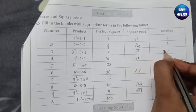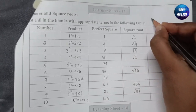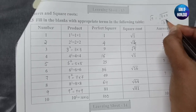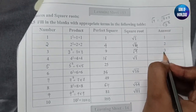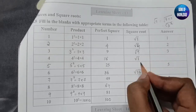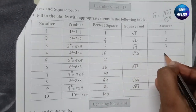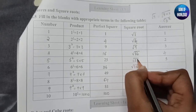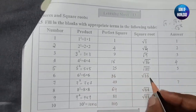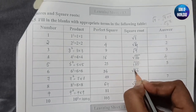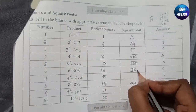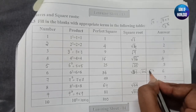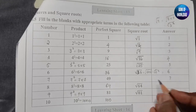Let me show you how this is possible: root of 9 can be written as root of 3 into 3, that is root of 3 squared. The square and root cancel, leaving 3. Next, it should be 16 — square root of 16 is 4, since 4 fours are 16. For 5, it should be root of 25. Root of 36 is 6, because 36 can be written as 6 squared — square and root cancel, leaving 6.